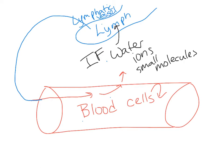It is the fluid portion of the plasma that moves out. Things that can't get out include all the cells, plasma proteins, and larger molecules. What does move through is water, ions, and small molecules — that's also what goes into the lymph. So we're moving fluid through your body, cleansing the blood.